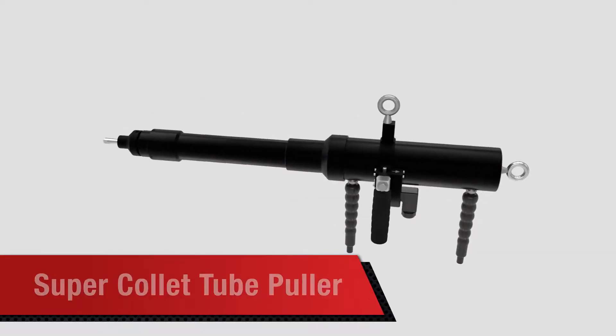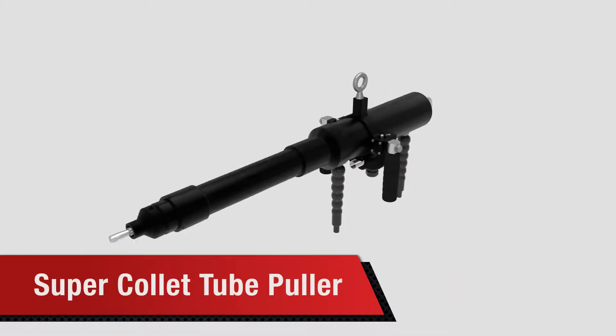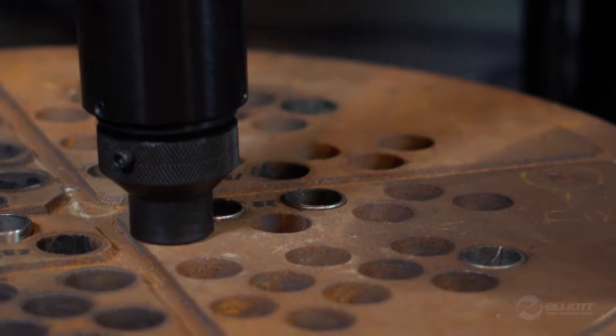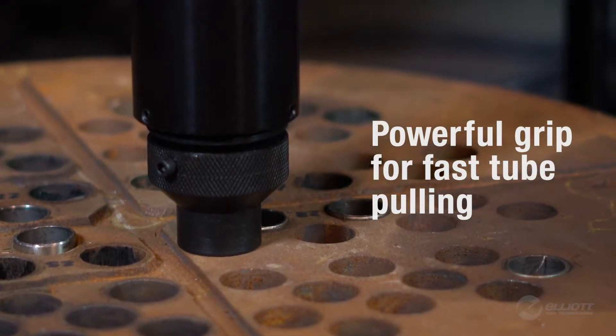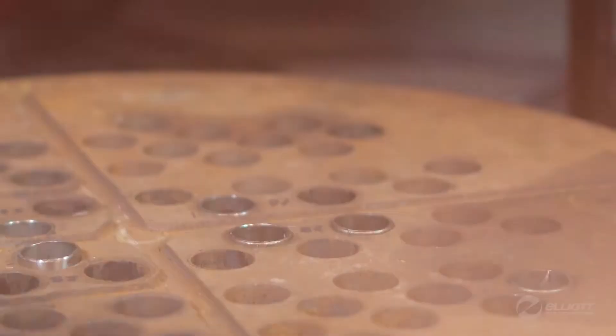The SuperCollet Tube Puller is designed to quickly pull tube stubs without damaging tube sheets. Offering the same gripping power as a spear, simply insert the collet and quickly remove the tube stub from the tube sheet.